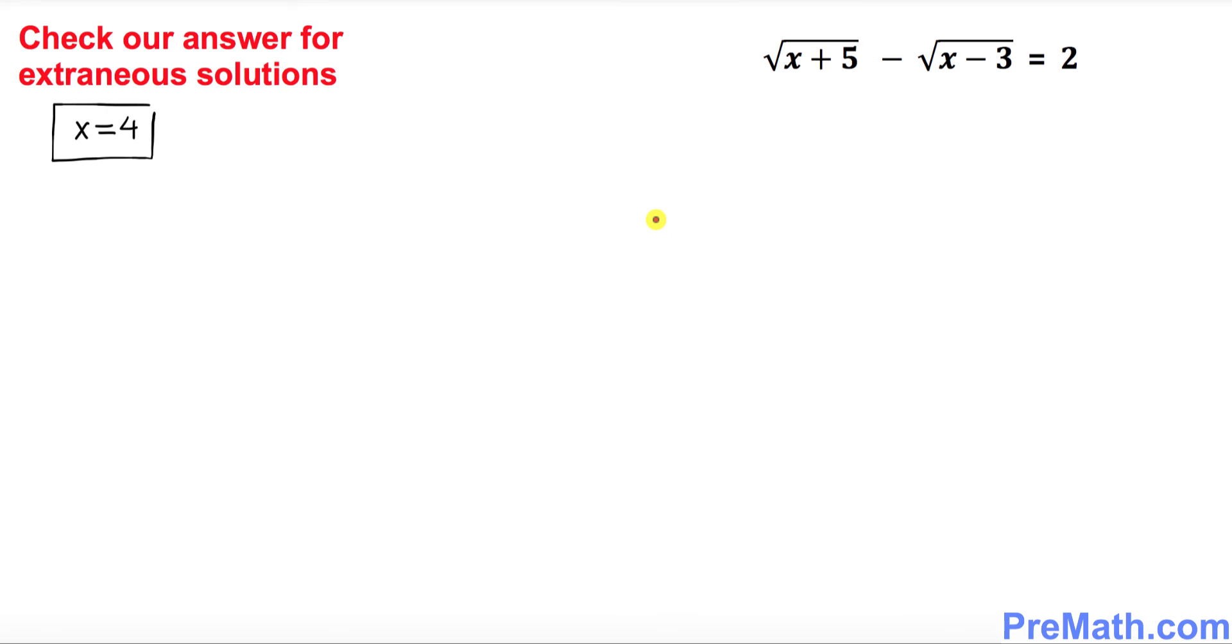And finally we want to check our answer for any extraneous solution. So in the previous step we figured out x equal to 4 is our solution. Now let's plug it in in our original equation wherever you see x replace it by 4. So let's take care of that thing. So that's going to give you square root of 4 plus 5 minus square root of 4 minus 3 and my question is is the left hand side equal to 2.